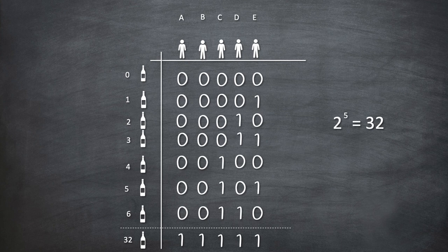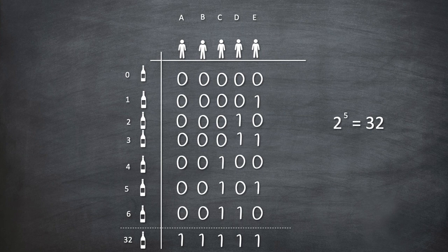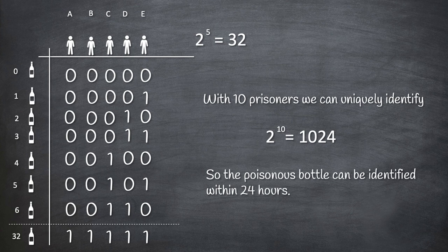2 is the base of binary here because there are only 2 possibilities. Either the prisoner can drink or don't drink from a bottle. So extending the same logic, with 10 prisoners, we should be able to find the poison bottle among a maximum of 1024 bottles in just 1 round of testing.